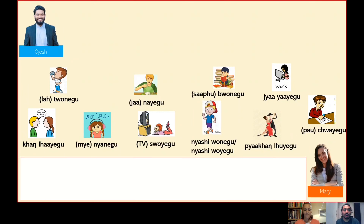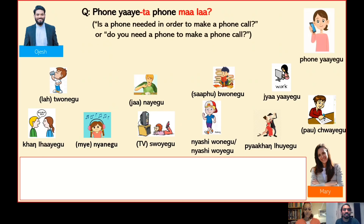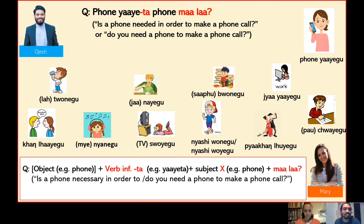Now we have learnt how to use ma and moi with verbs. However, we can also use them with nouns. For example, we can ask: phone yae ta, phone mala. This sentence has two meanings: on the one hand, it means 'do you need a phone in order to make a phone call?', and on the other hand, the general question 'is a phone necessary to make a phone call?' The structure of this question is: object plus verb infinitive with suffix ta, plus subject, plus ma, plus la.